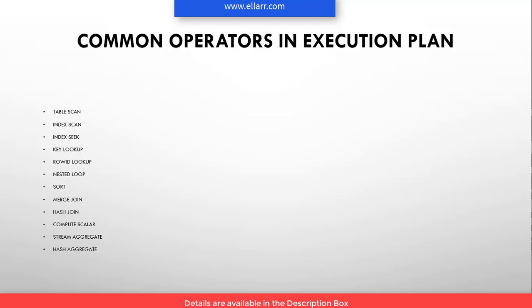Then I will cover the operators most commonly used in execution plans: table scan, index scan, index seek, key lookup, row ID lookup, nested loop, sorting, merge join, and hash join. You perform a join operation but internally SQL Server may use merge join, hash join, or nested loop. Similarly, you write a group by command but internally it can use either stream aggregate or hash aggregate — all these things you will understand.